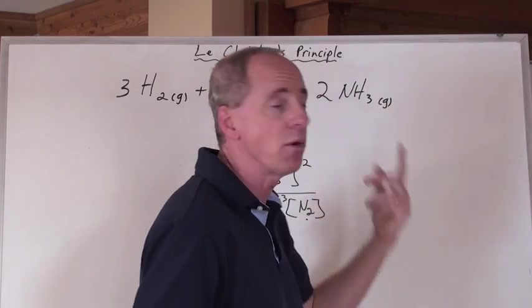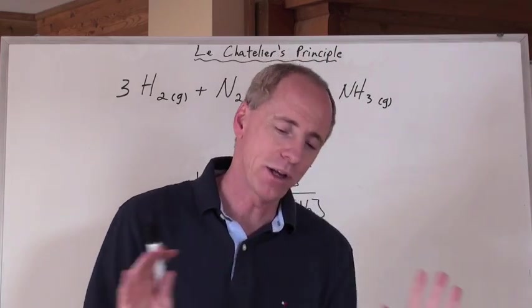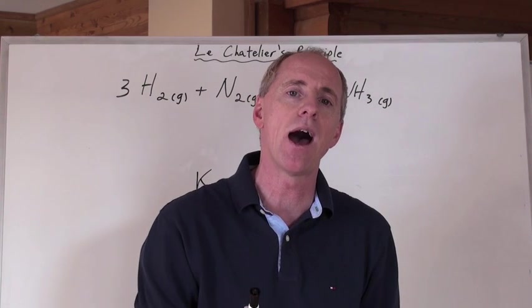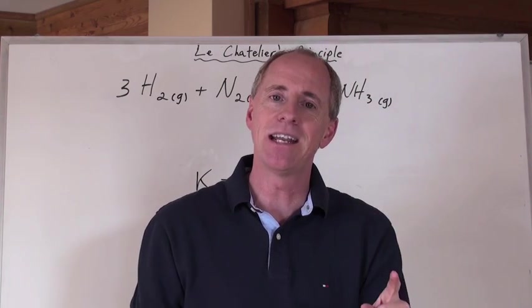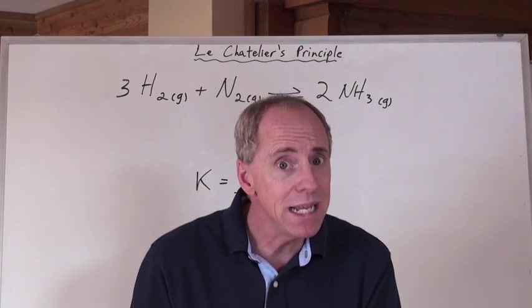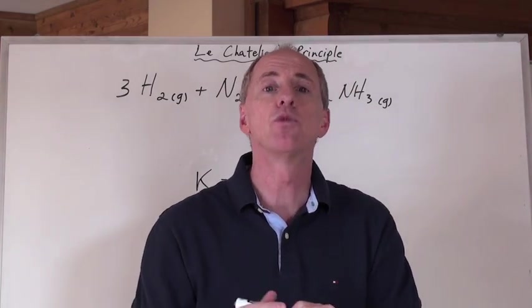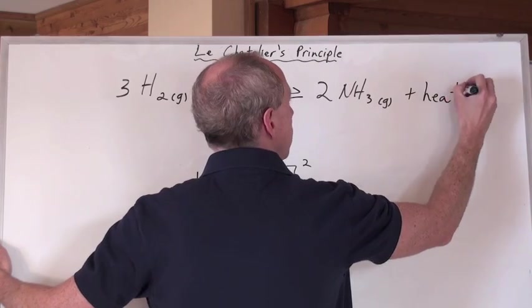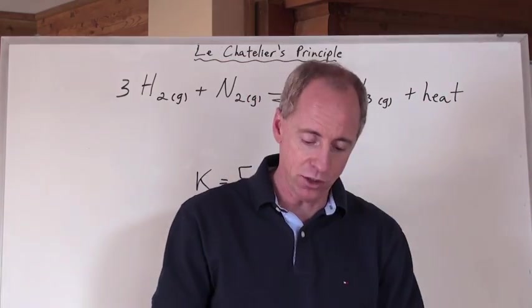So for two moles, it's about negative 92. I don't care about that kilojoule number as a number. What I care about is the sign. The sign is a negative, which means it's an exothermic heat of formation, which means then that heat is written as a product, right? So it's an exothermic heat of formation reaction.